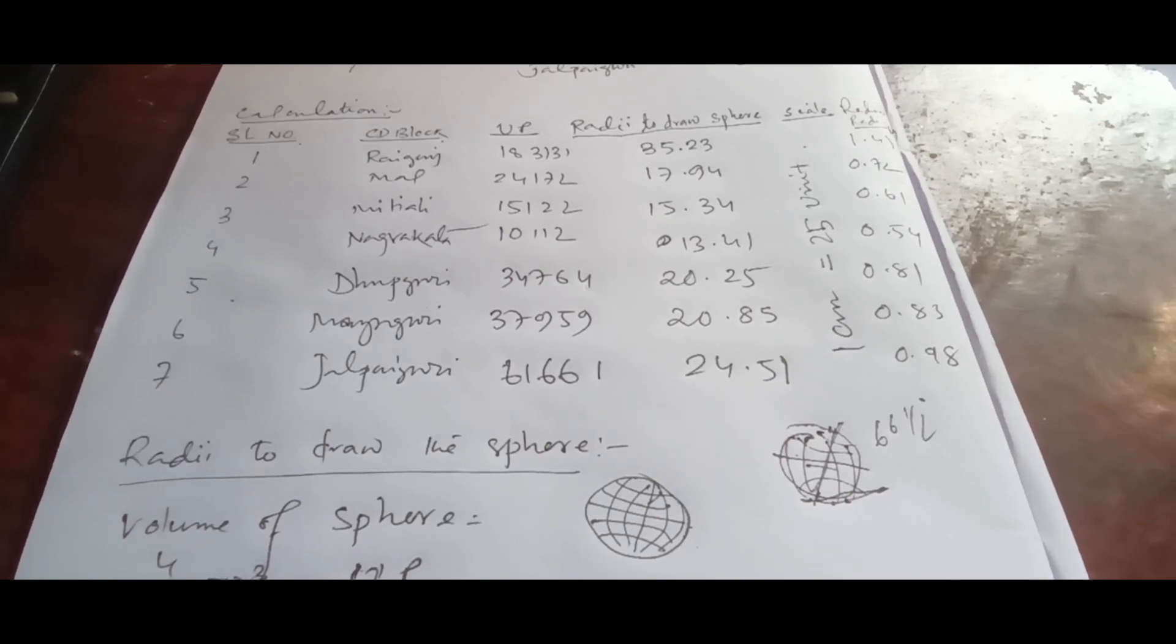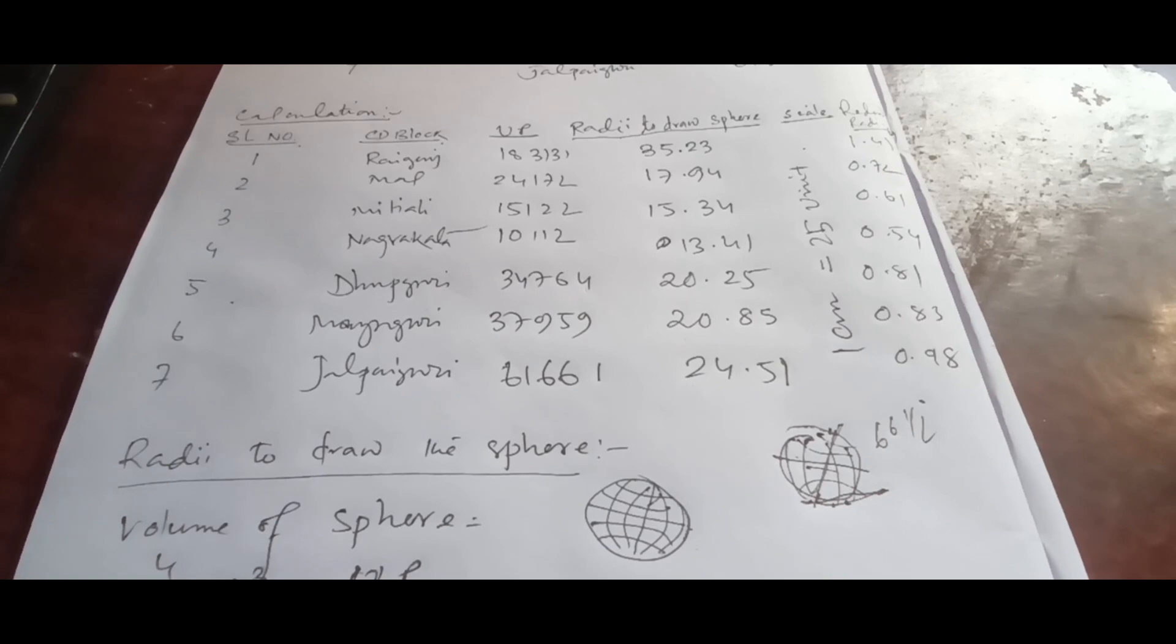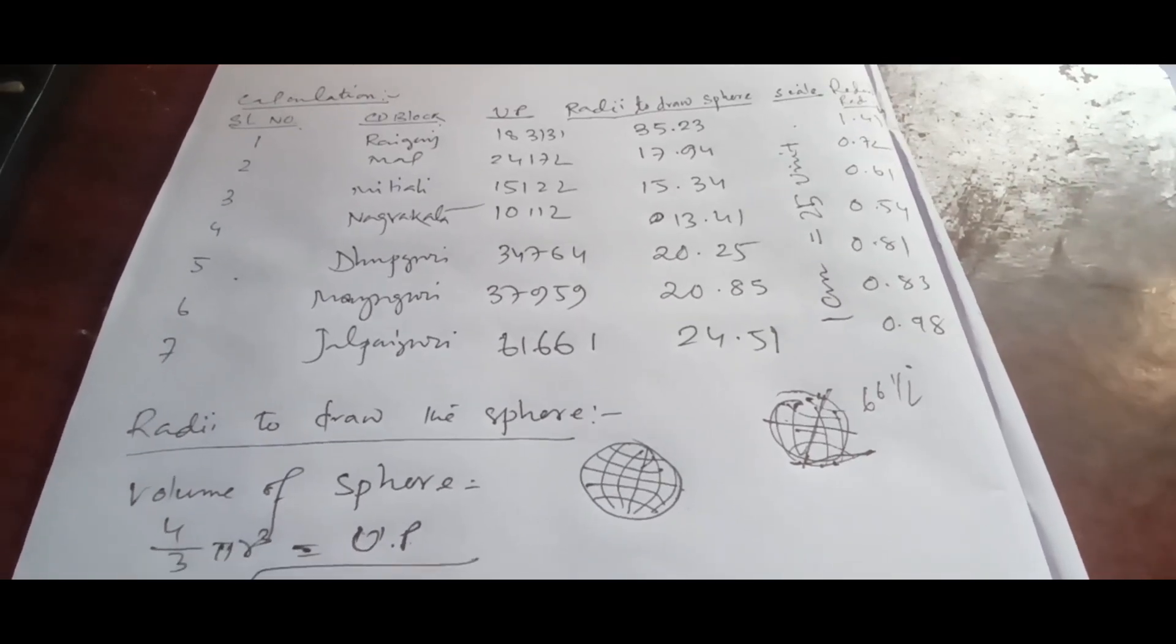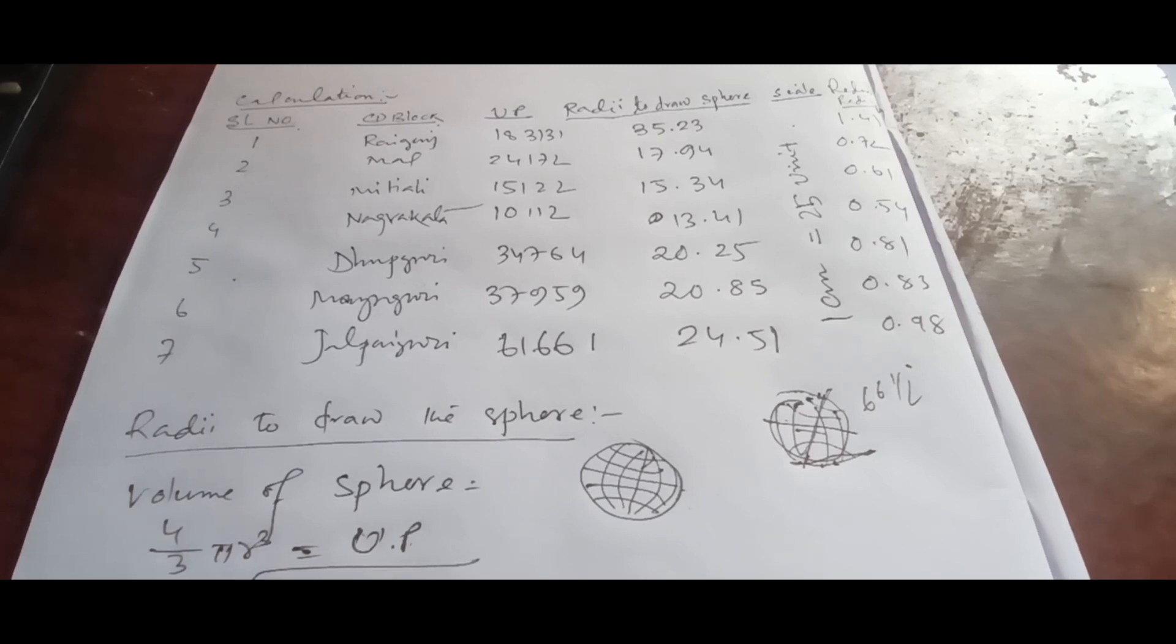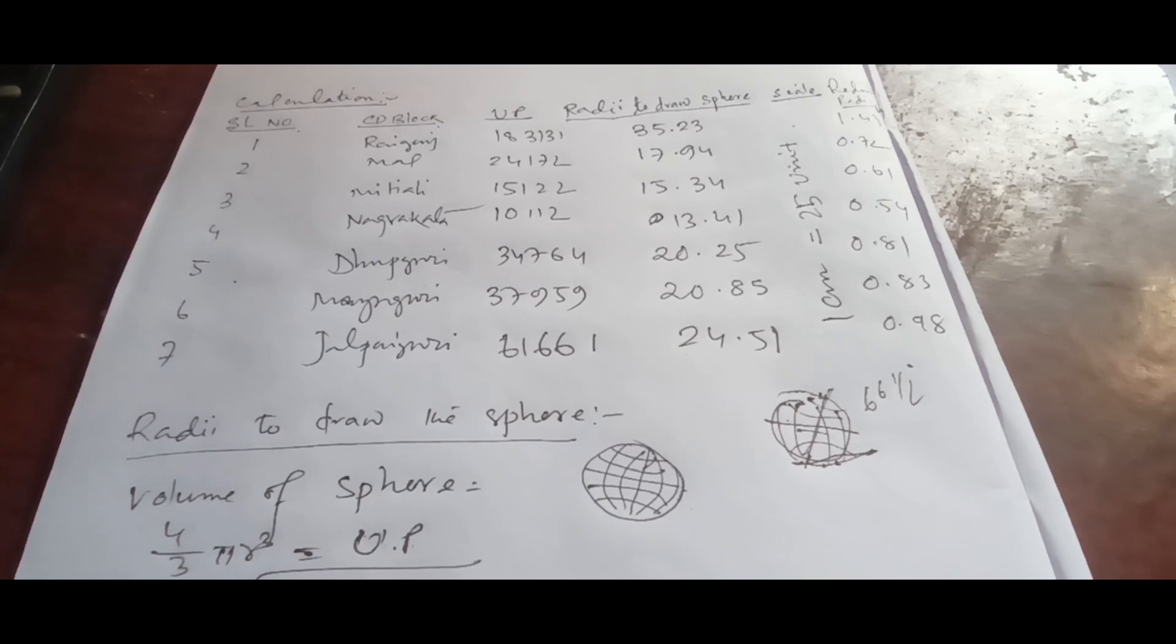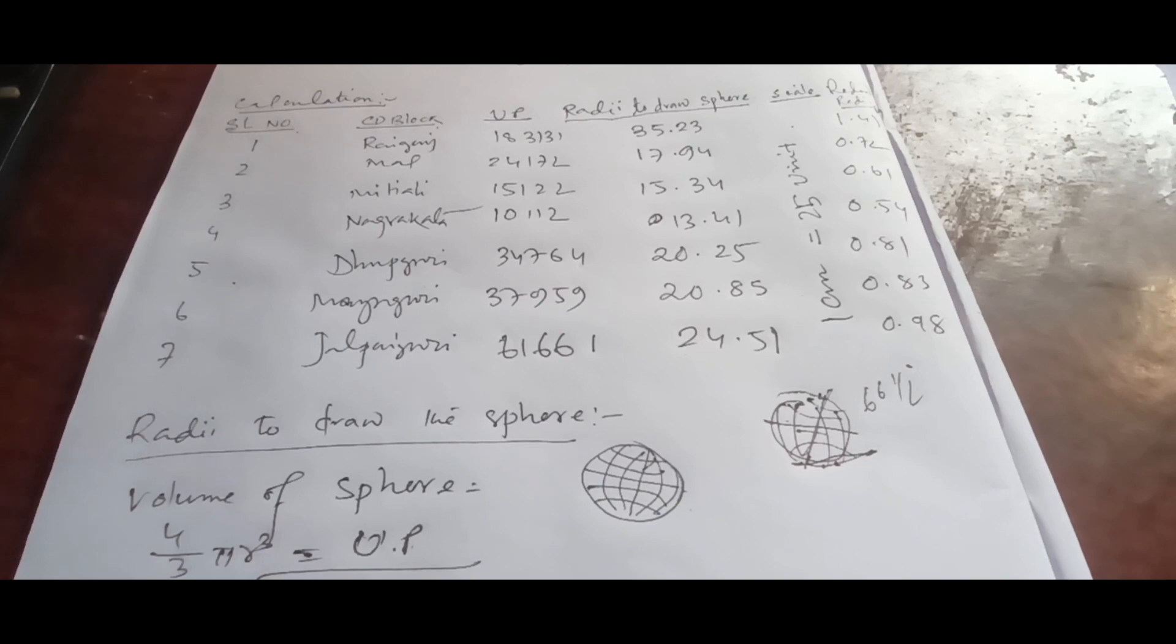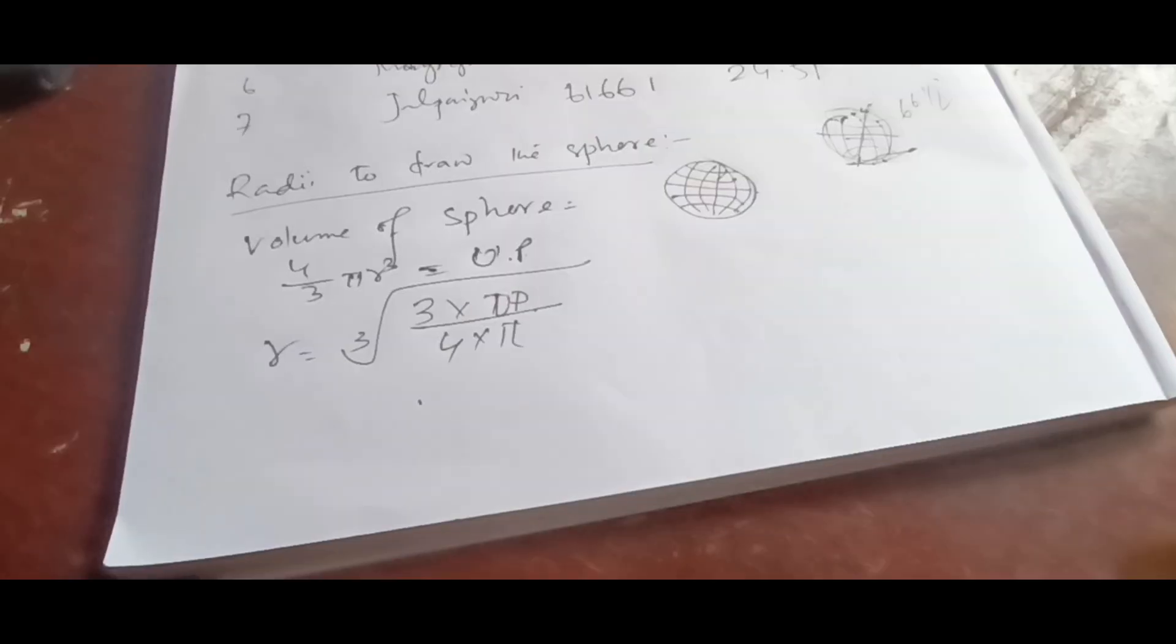Before we end this video we need to understand another thing - if the scale is to be drawn, how to draw the scale? We have to also draw the scale. For that case we have to take the population. For example here the population was 61,661 and more than one lakh was also there, 1,83,131. How to select the scale?